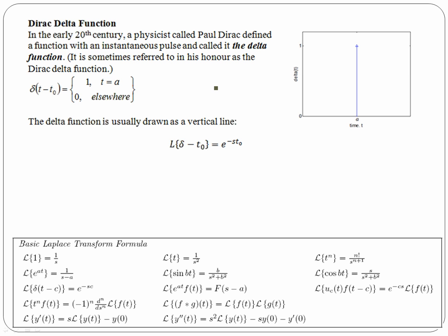The delta function is defined here. Delta of t minus t naught is equal to one when t is equal to a, otherwise everywhere else is equal to zero.